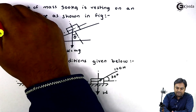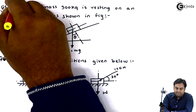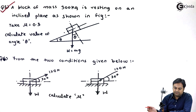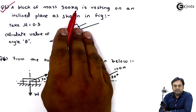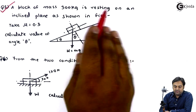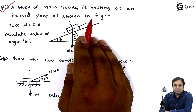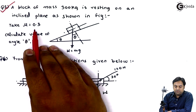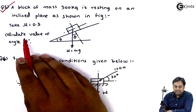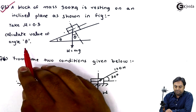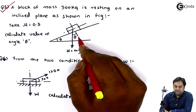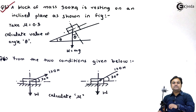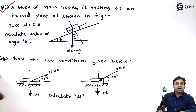Let us take question number 5. Let's read what is given here. A block of mass 300 kg is resting on an inclined plane as shown in figure. Take mu equal to 0.3, calculate value of angle theta. Here the diagram is given in which they are telling us to calculate the value of theta. So let us start with this problem. First I will be writing the data for this.